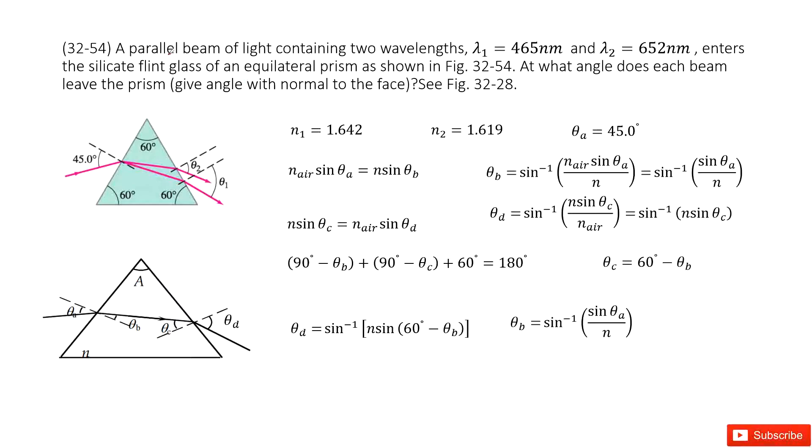Now we have a parallel beam of light containing two wavelengths, lambda 1 and lambda 2. Lambda 1 and lambda 2 enter in a glass. We can check our textbook to find the index n1 and index n2 for these two waves. We just write them as n1 and n2.